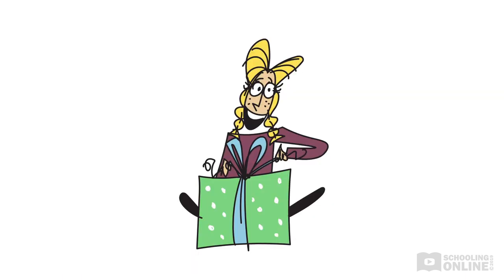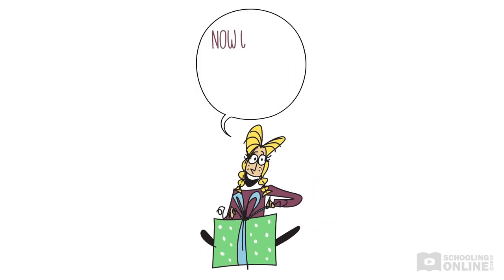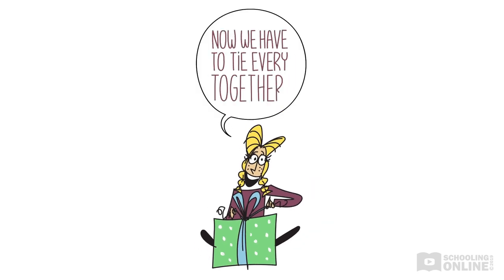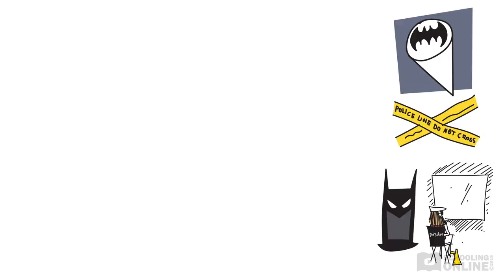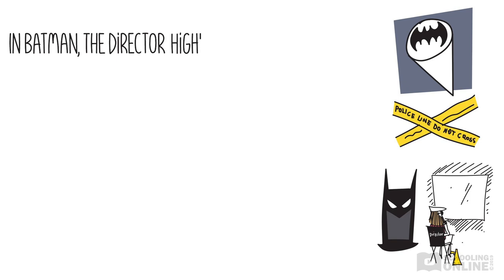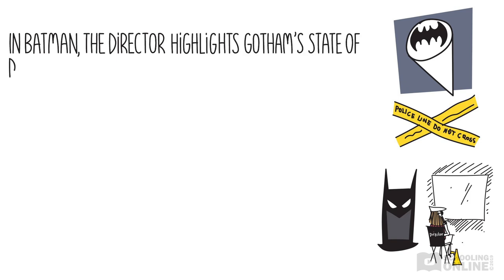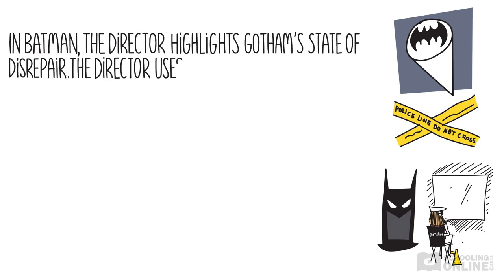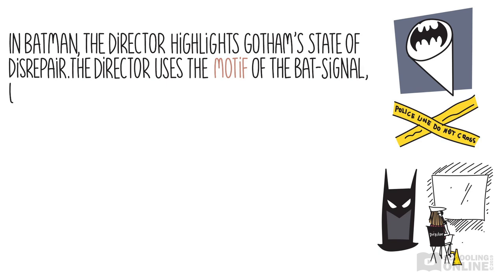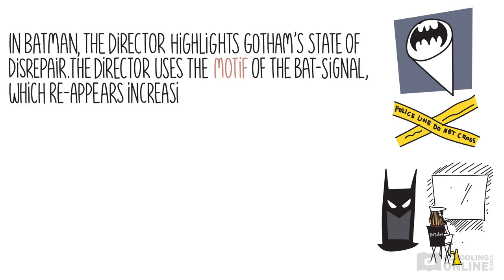As a final example, we'll look at how to apply PEEL analysis to motifs. This time, we are going to put all of our sentences together to show you what a complete paragraph would look like. In Batman, the director highlights Gotham's state of disrepair. The director uses the motif of the bat signal, which reappears increasingly frequently throughout the film.